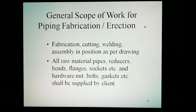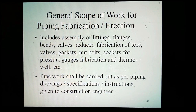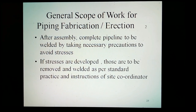General scope of work for piping fabrication and erection. Fabrication includes cutting, welding, and assembly in position as per drawing. All materials — pipe, reducers, bends, flanges, sockets, etc. — and hardware such as nuts, bolts, and gaskets shall be supplied by the client. Fitment includes assembly of fittings such as flanges, bends, valves, and reducers; fabrication of tees; fitment of non-return valves, gaskets, sockets, pressure gauges, and thermal elements. Pipe work shall be carried out as per piping drawings, specifications, and instructions given to the construction engineer. After assembly, the complete pipeline is to be welded with necessary precautions to avoid stresses. Any stresses developed are to be removed and welded as per standard practice and instructions of the site coordinator.